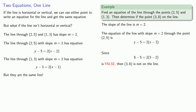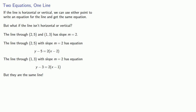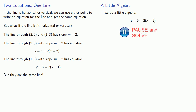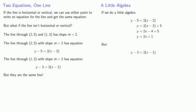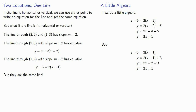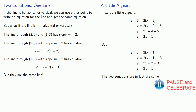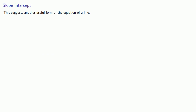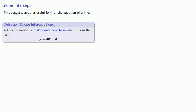The question we have to ask is: which one of these is correct? To answer that, let's do a little bit of algebra and solve both equations for y. The first equation, when we solve for y, gives us a result. When we solve the other equation for y, we see that after solving both equations for y, the two equations are in fact the same. So it doesn't matter which point we use. This suggests there's another useful form of the equation of the line, known as the slope-intercept form. A linear equation is in slope-intercept form when it is in the form y = mx + b.